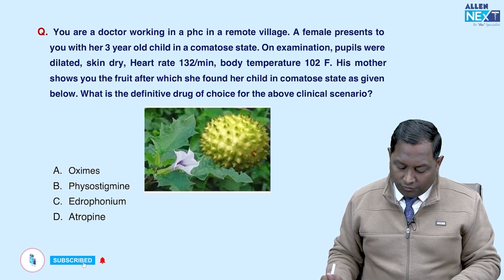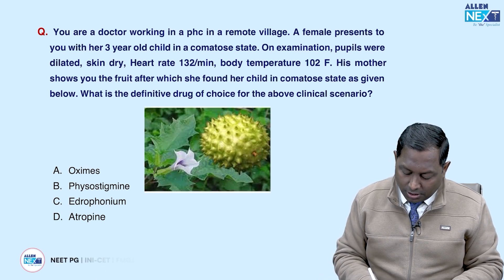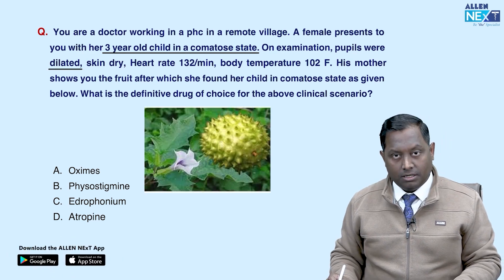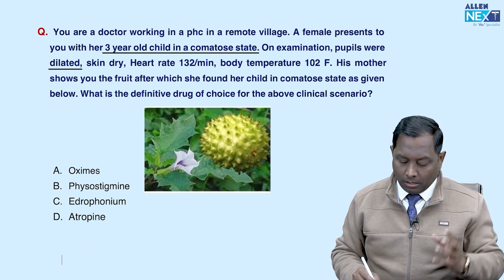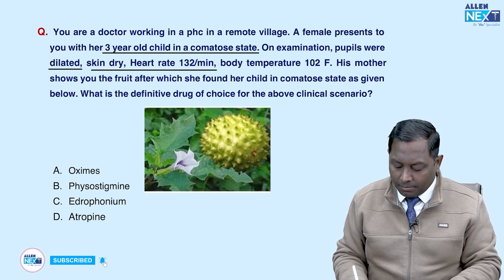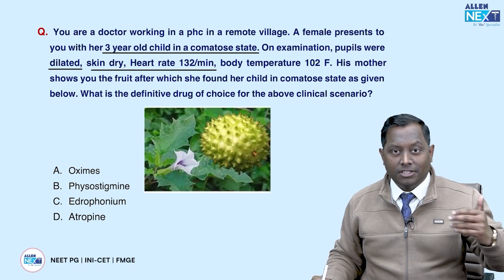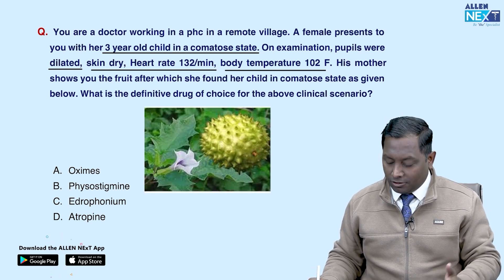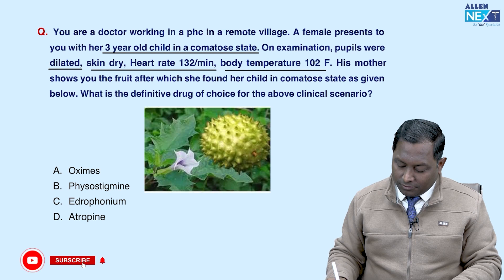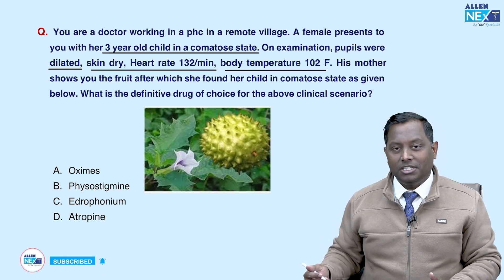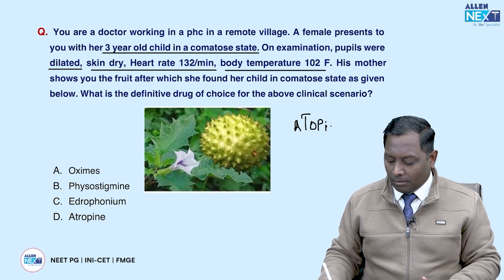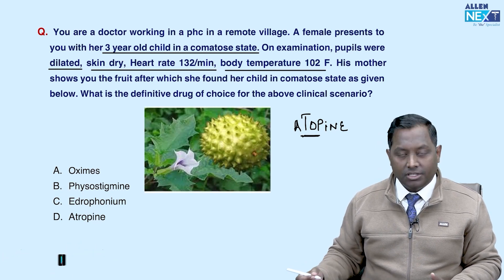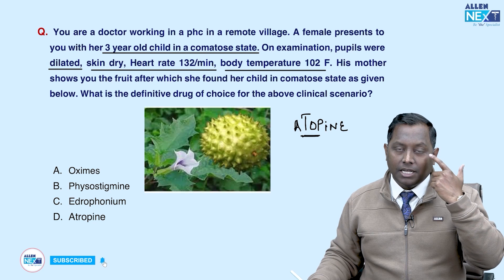A doctor working at a PHC in a remote village sees a female who presents with her three-year-old child in a comatose state. On examination, pupils were dilated, skin dry, heart rate elevated, body temperature elevated — everything is on top. The mother shows a fruit the child found. This pattern — dilated pupils, dry skin, elevated heart rate and temperature — is classic atropine poisoning from a plant like Atropa belladonna.